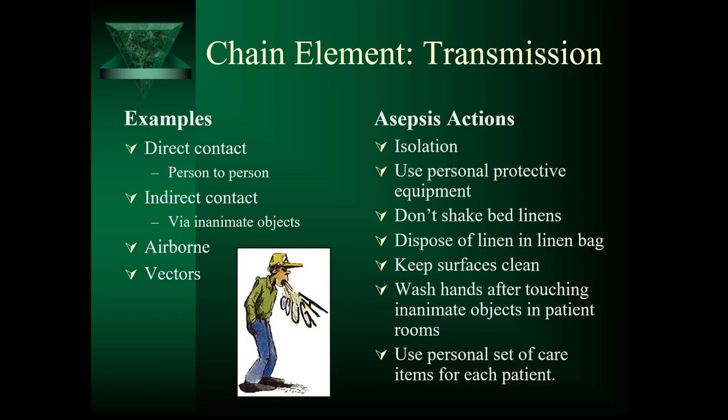Transmission is the method by which organisms are spread. Once a pathogen has exited the reservoir, it needs a mode of transmission to reach a new host. Direct contact is person-to-person transmission, which includes touching, biting, kissing, or sexual intercourse. Inanimate objects such as eating utensils, soil, Kleenex, doorknobs, handles, computer keyboards, surgical instruments, phones that nurses carry, or wound dressings are common objects that can also transmit infection.